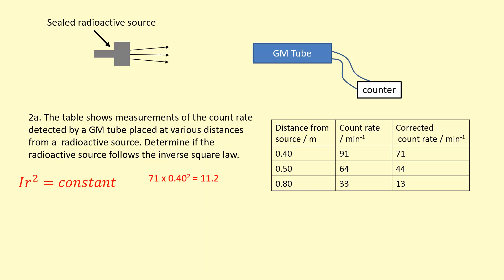So the first set of data, we've got 71 times 0.4 squared, it gives you 11.2, and then 11.0 for the second set, and then 8.32. As you can see, the first two are roughly the same, but the last one is different.